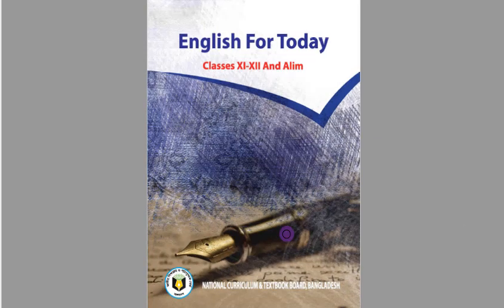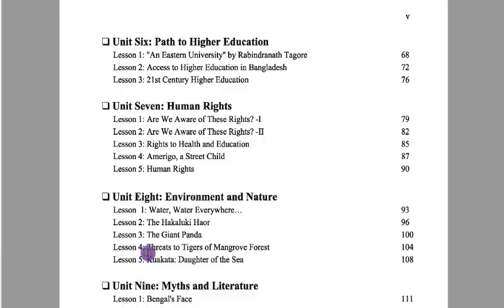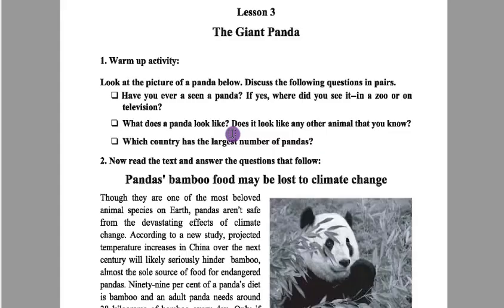Let's go to find out our contents from the table of contents. Unit 8, Lesson 3 — 'The Giant Pandas.' Our today's class is about giant pandas, so we will go directly to the text. This is our text in the textbook 'English for Today' — Lesson 3: The Giant Panda.